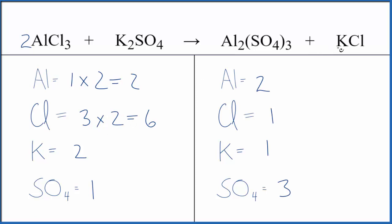Now we can balance the chlorines. We need six of them. Six times one gives us the six chlorines. They're balanced.